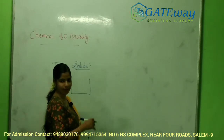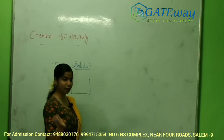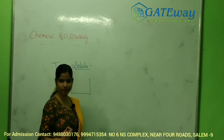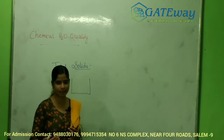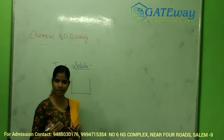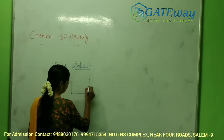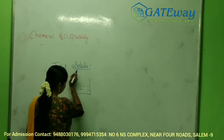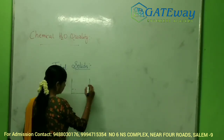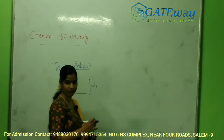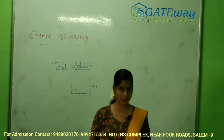Since it is chemical water quality, all the testing experiments differ from physical water quality, where we can test in response to the senses. For chemical water quality, first we record the empty weight of the crucible — W1.